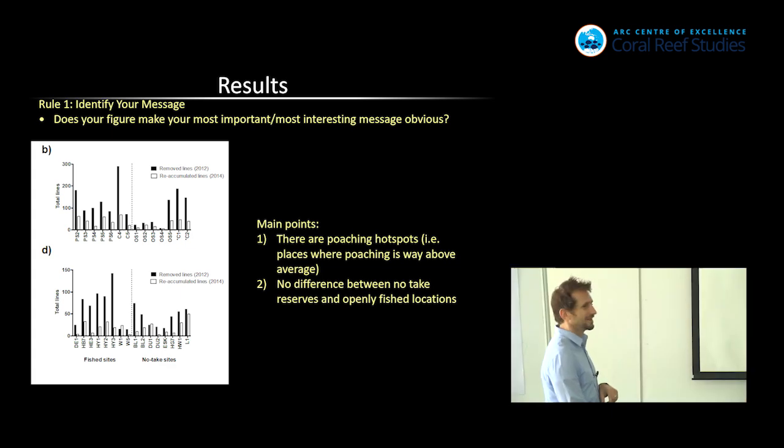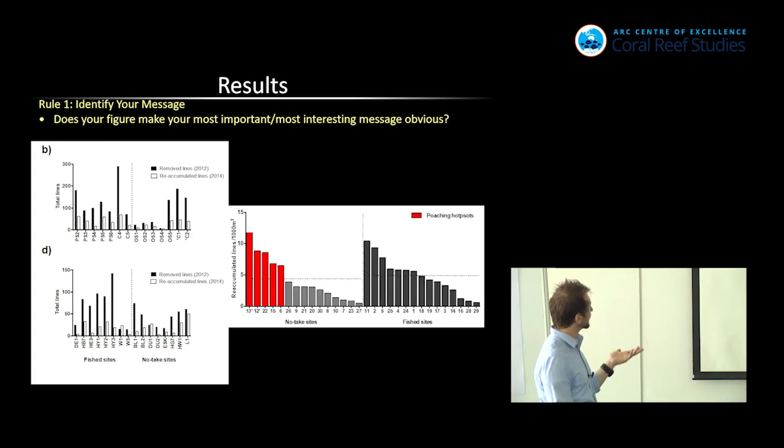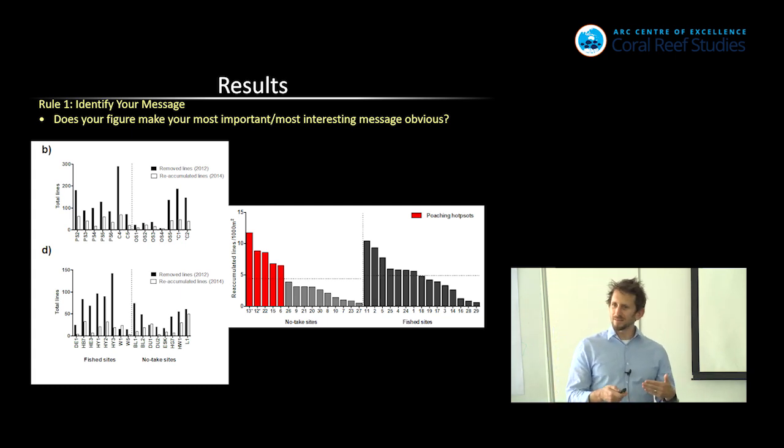I would never have known that looking at this. This is not screaming these two messages out. So what did we do? You could probably do a better job than this, but still, what we've done here is this is the average for no-take reserves, and this is the average for fish sites. And those are basically the same. And we've also said there's poaching hotspots. We did it by saying these are the places that have above average poaching. So we made the two messages here the things that you see. You see the red versus that, and then you see that this line is about the same as that line there. So it really makes the two messages from this figure much clearer. We could probably have hired a graphic design person to do much better, but at least in this example, the two messages are there.